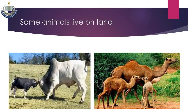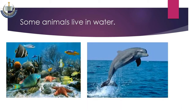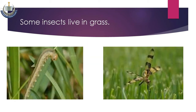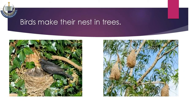کچھ جانور پانی میں رہتے ہیں جیسے کہ whale، shark، dolphin وغیرہ۔ کچھ گھاس پر رہتے ہیں جیسے insects، اور کچھ اڑتے ہیں اور اپنا گھونسلا بناتے ہیں جیسے کہ birds۔